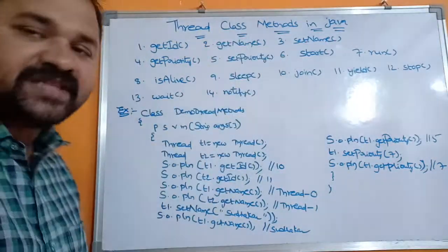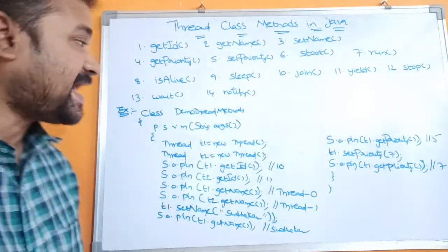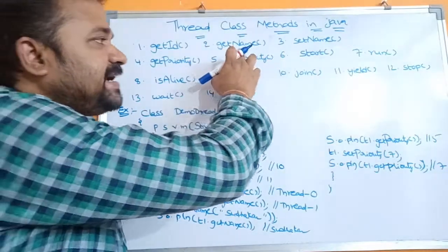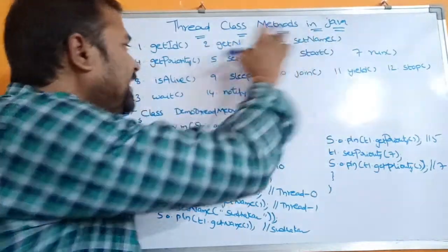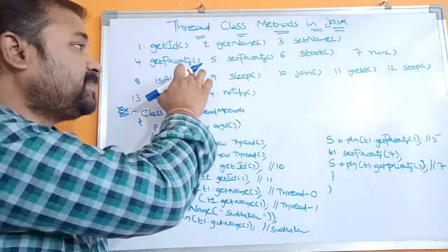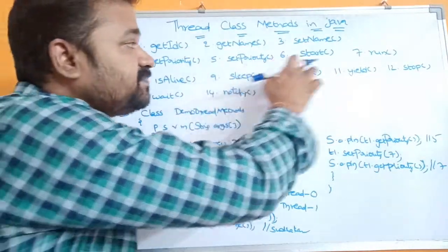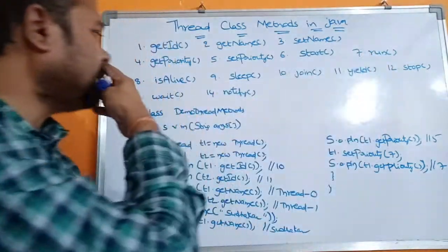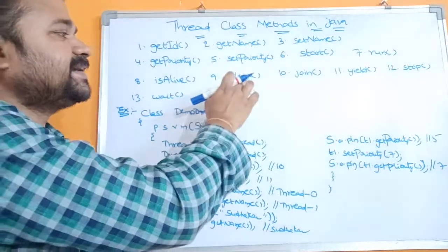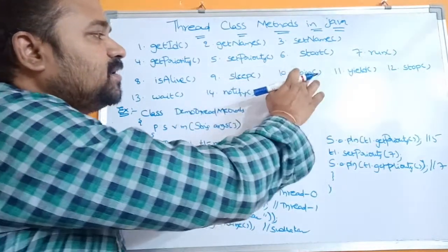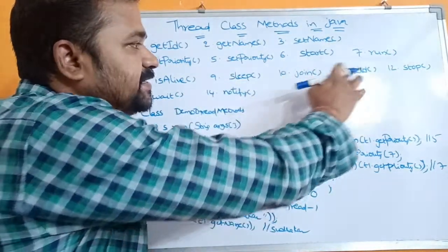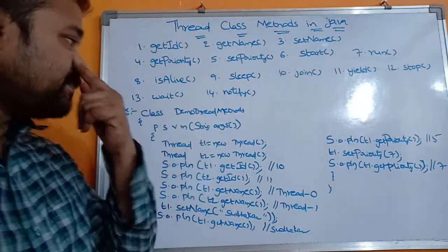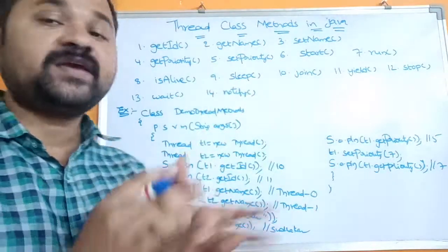Let's see what are the methods of the Thread class. The first one is getId, second one getName, setName, getPriority, setPriority, start method, run method, isAlive method, sleep method, join method, yield method, stop method, wait method, notify method.